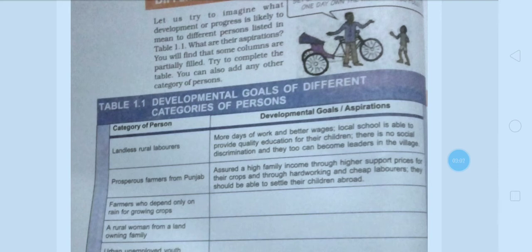Here I am discussing the example of a landless rural laborer — someone who has no land and is a laborer in a rural area. For them, development means: more days of work, better wages, local schools able to provide quality education for their children, no social discrimination, and that they too can become leaders in the village and participate in major decisions. This is development for them.